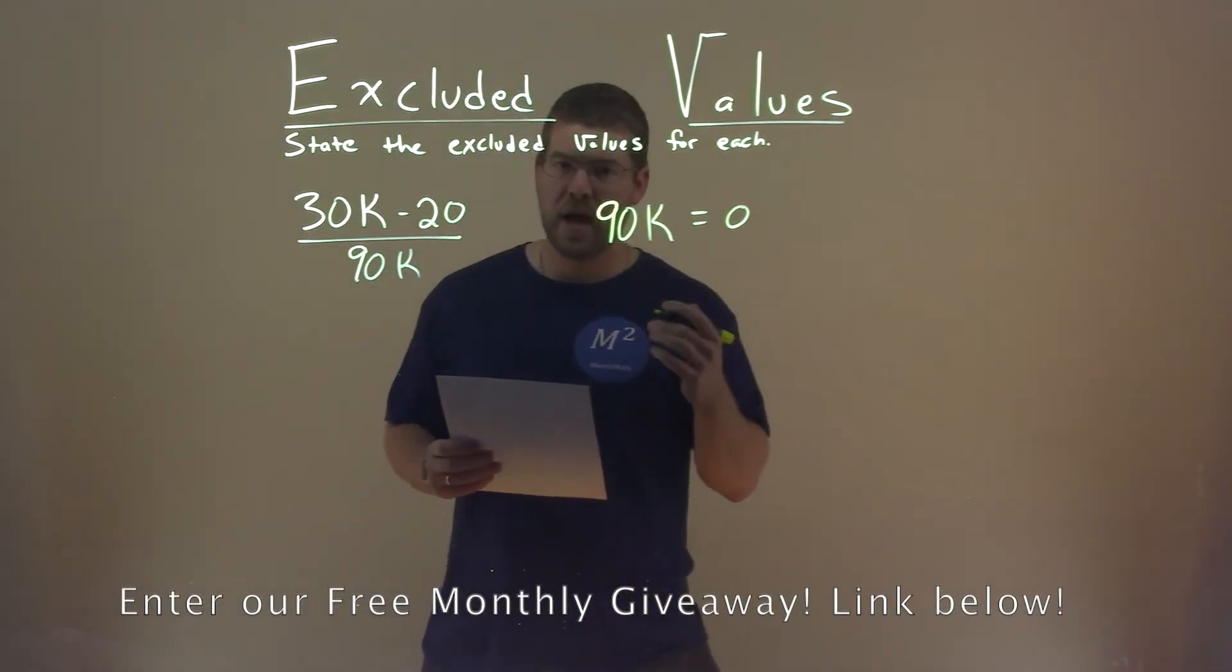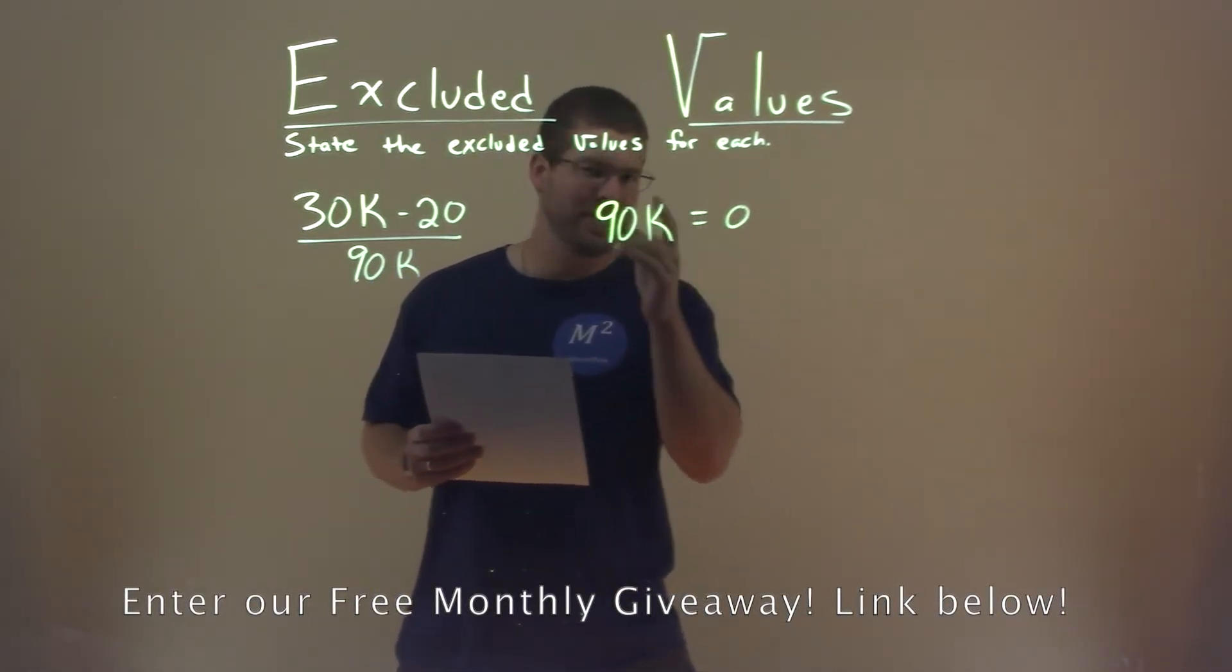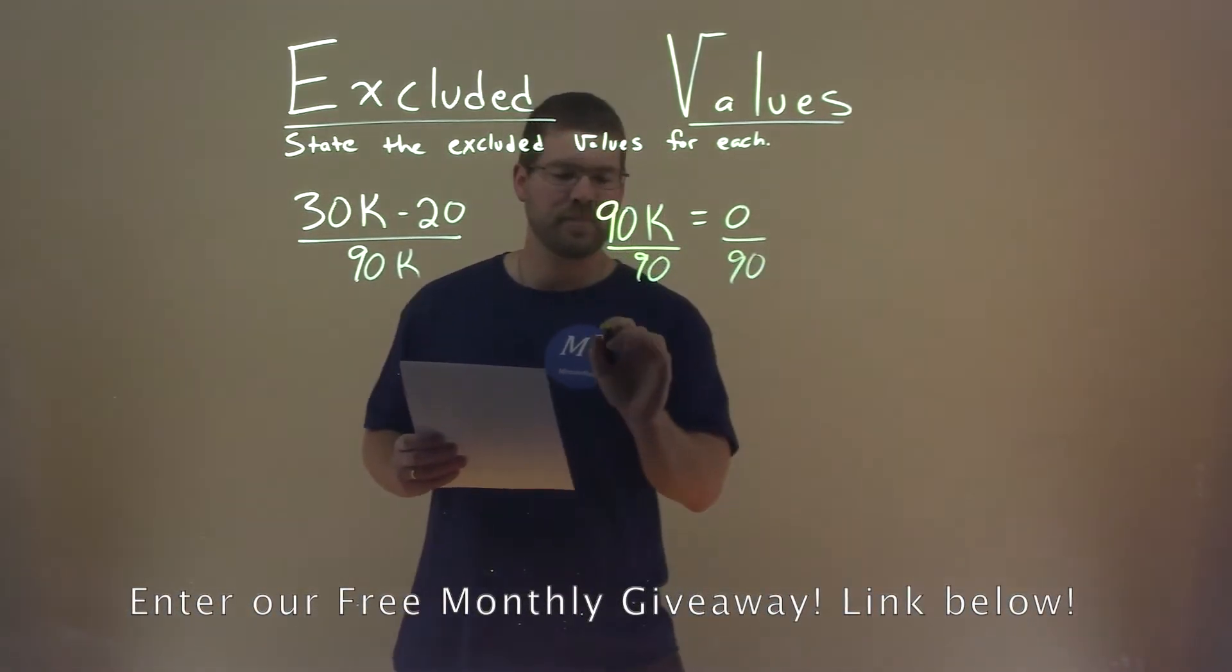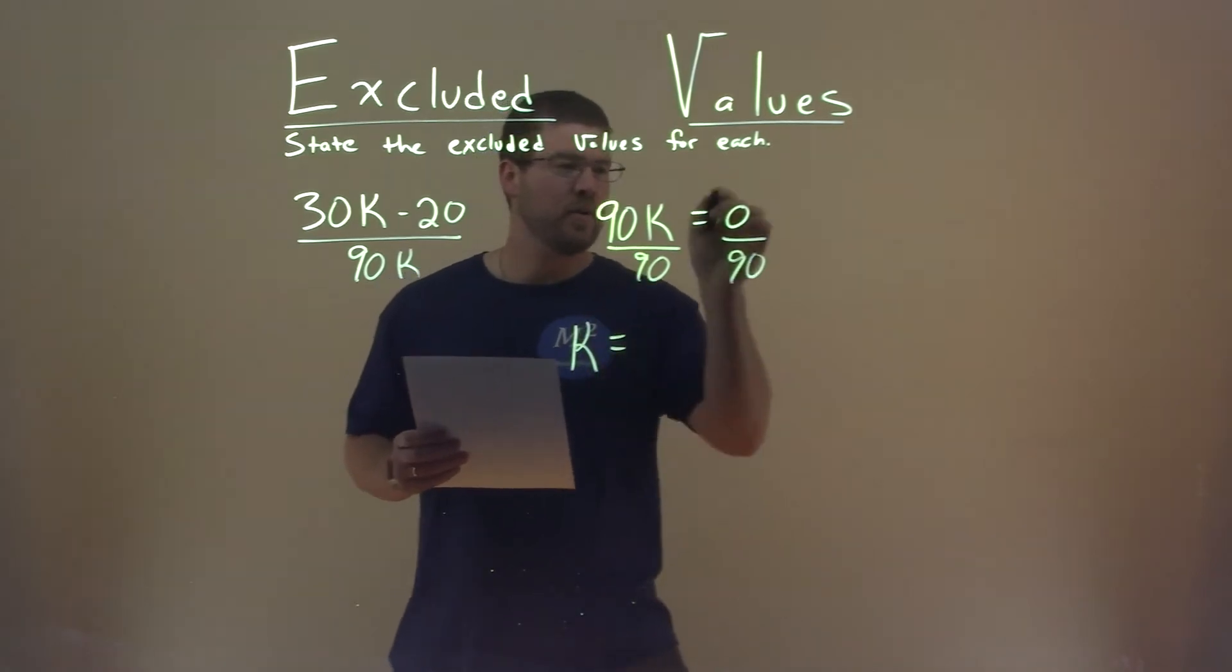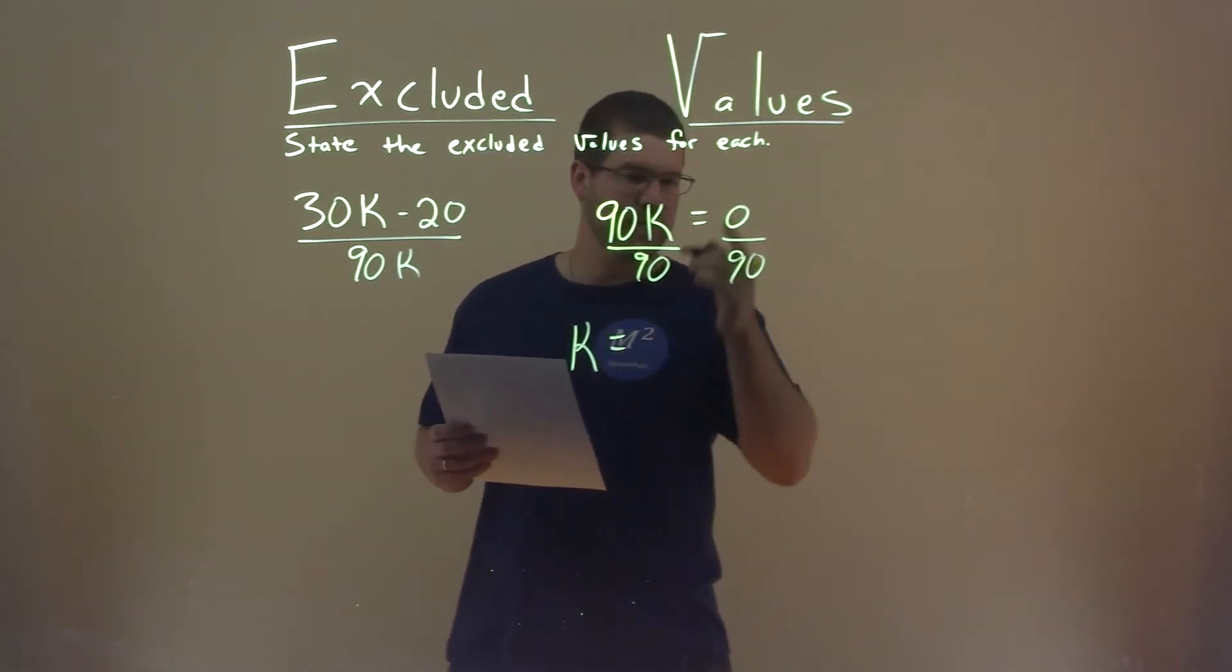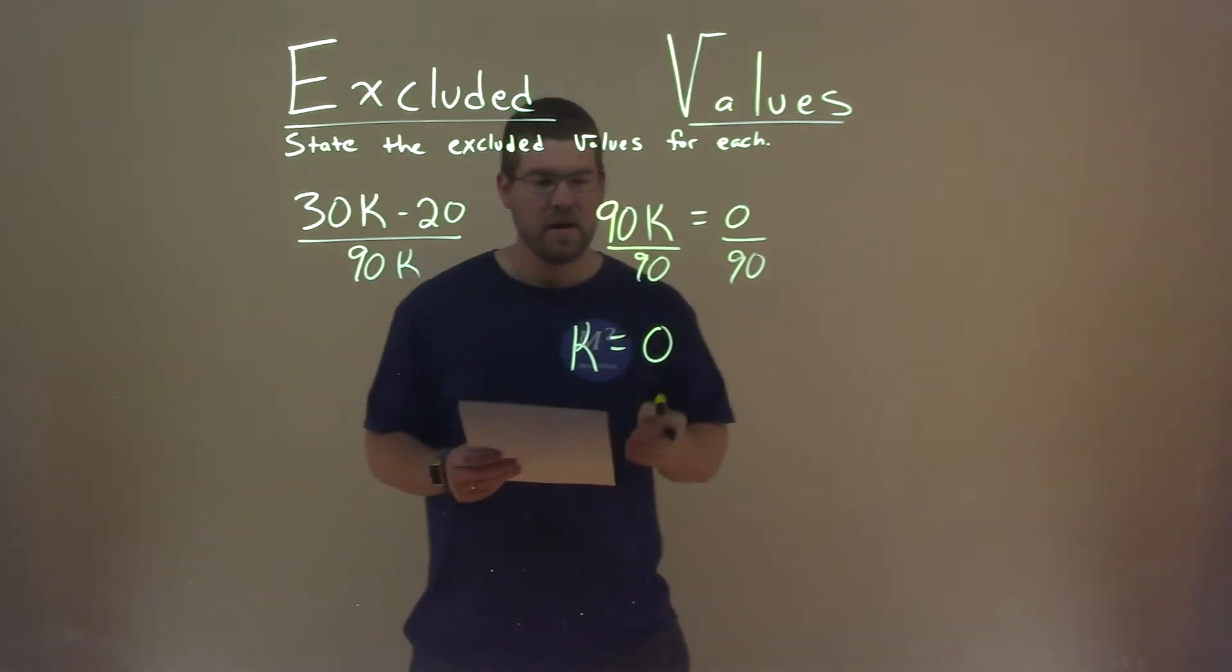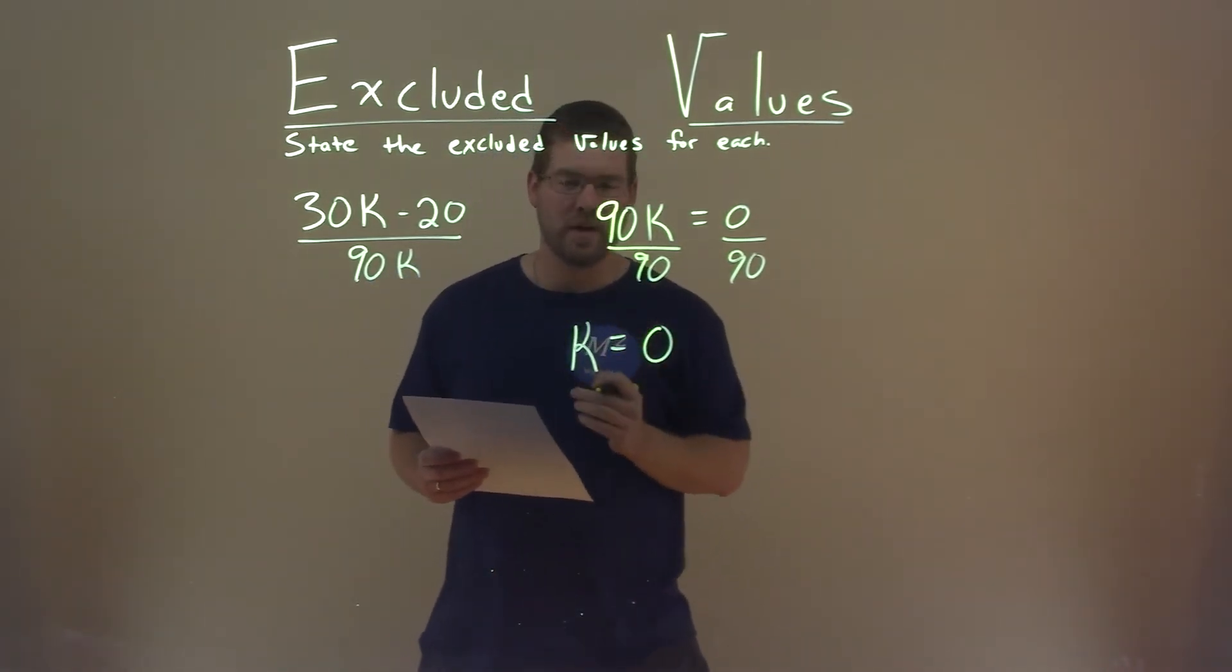Well, 90 times k, the opposite of multiplication is division, so we divide both sides by 90. This gives us k equals zero divided by 90, which is just zero. And so zero is our excluded value.